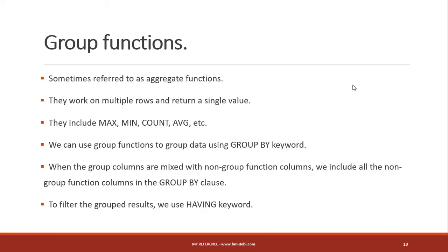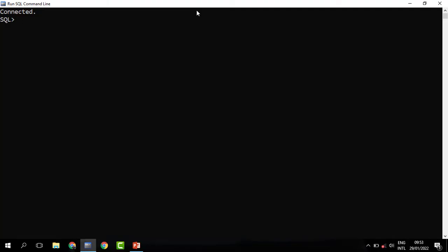For instance, if we need to get the sum of the total salary spent on every department, we need to add up all the salary amounts in that department. We may also need to know the average amount of salary spent in the company. To get the average, I need to add up all the salary amounts then divide by the number of employees who get that salary. Group functions work on multiple rows to produce a single value.